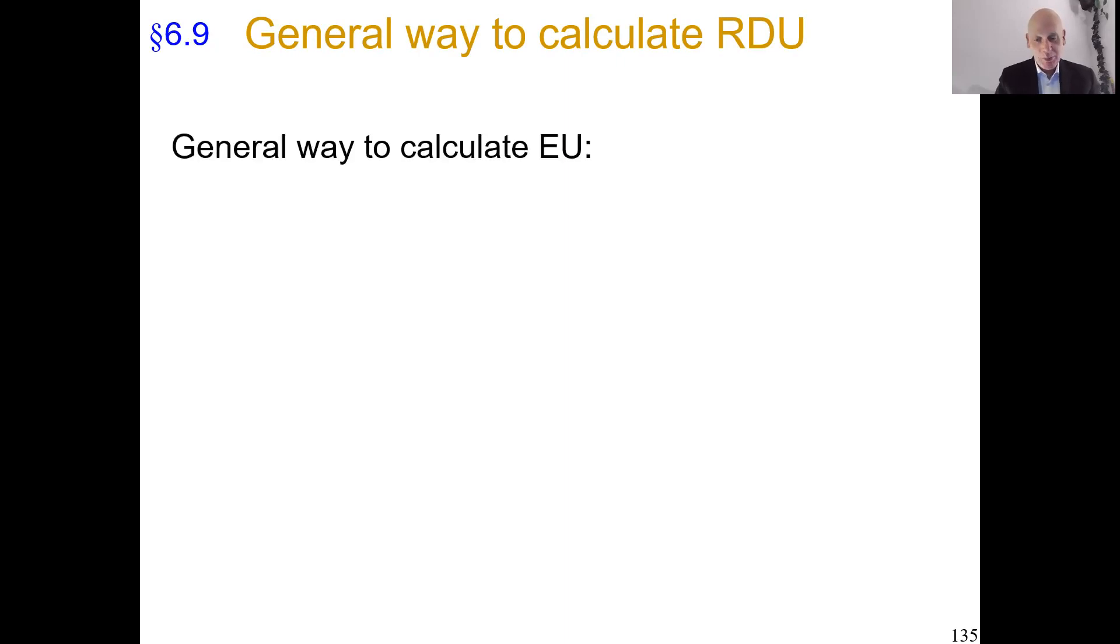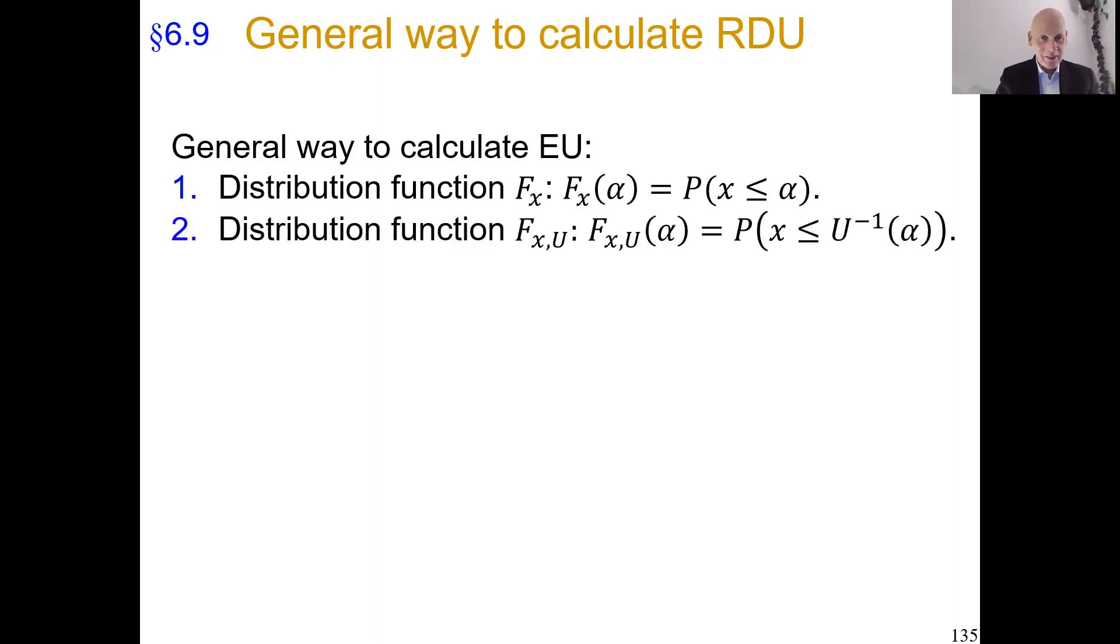First, I'll show you a way to calculate expected utility, a classical thing. We start taking for a random variable x the distribution function of x, assigning to each real number alpha the probability that x will be less than or equal to alpha. You know this very well from statistics courses and other things.